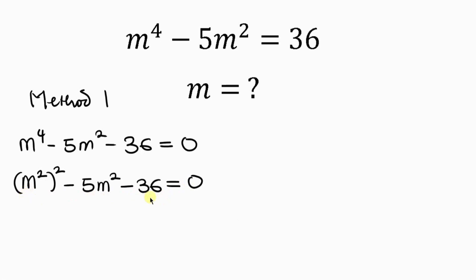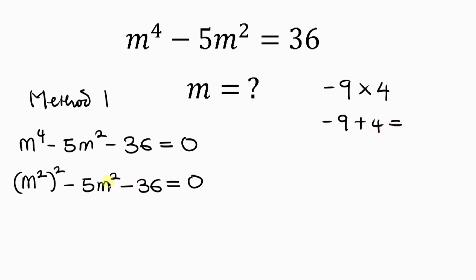In this quadratic equation, we're going to be taking m squared as a single variable, and the good thing is this quadratic equation can be factorized. So what is the factor of negative 36? The factor of negative 36 is negative 9 times 4. Why did I choose negative 9 times 4? It is because negative 9 plus 4 gives the coefficient of m squared, which is negative 5. So I'm going to be opening two brackets multiplying each other, equal to 0.